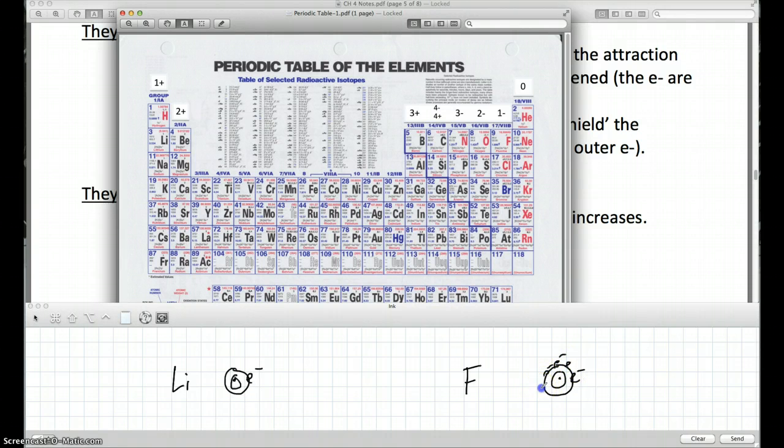So one, two, three, four, two, three, four, five, six, seven. It's got these seven electrons. So we have seven outer electrons, two inner electrons, so that's a total of nine. Nine protons, also nine electrons. Well, lithium only has three protons and three electrons.